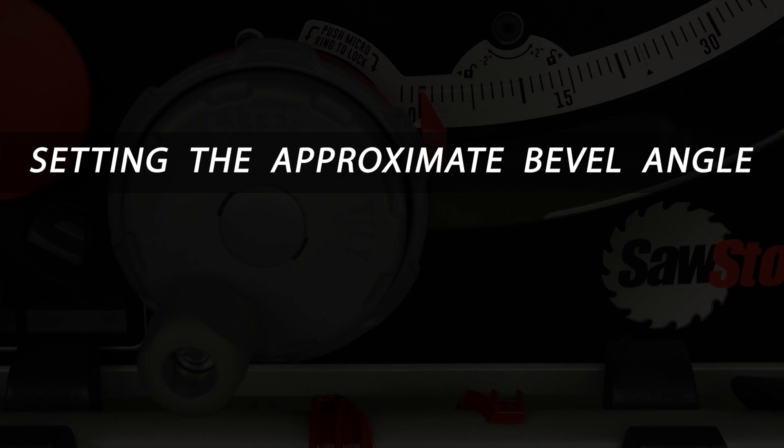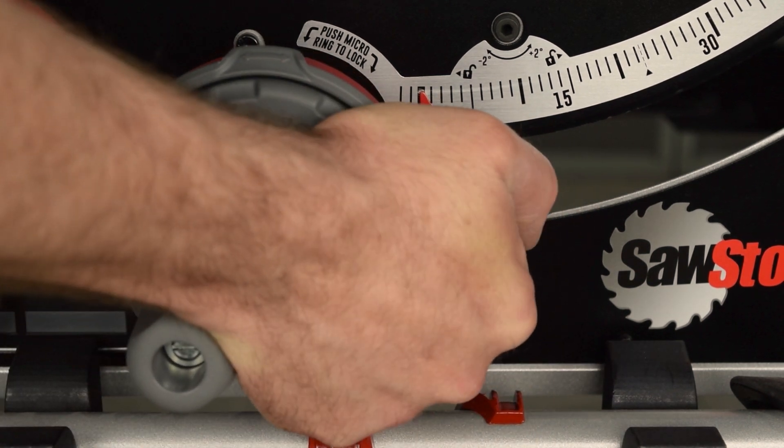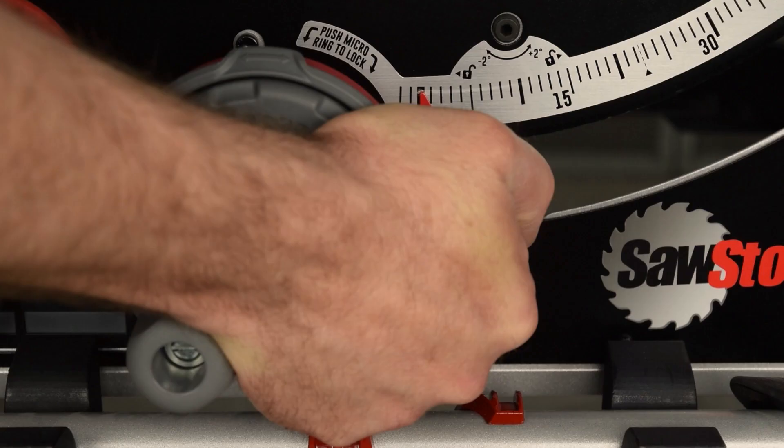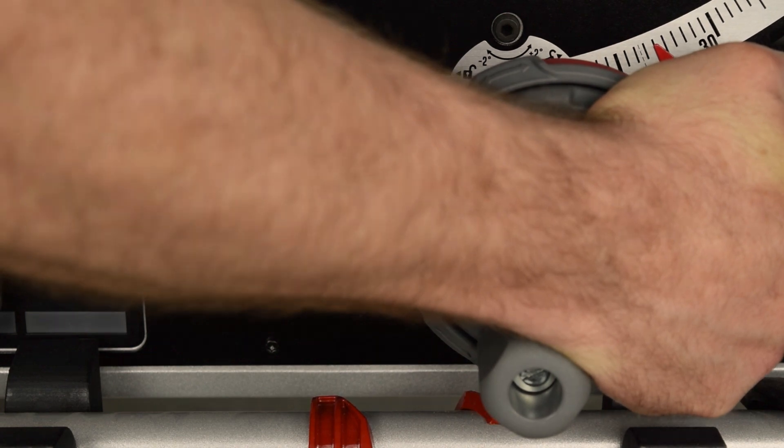First, here's how to use the main bevel control to set the blade angle to approximately the bevel angle you would like to cut. Squeeze the control to unlock the mechanism. While continuing to squeeze the control, swing the bevel to the intended approximate angle.